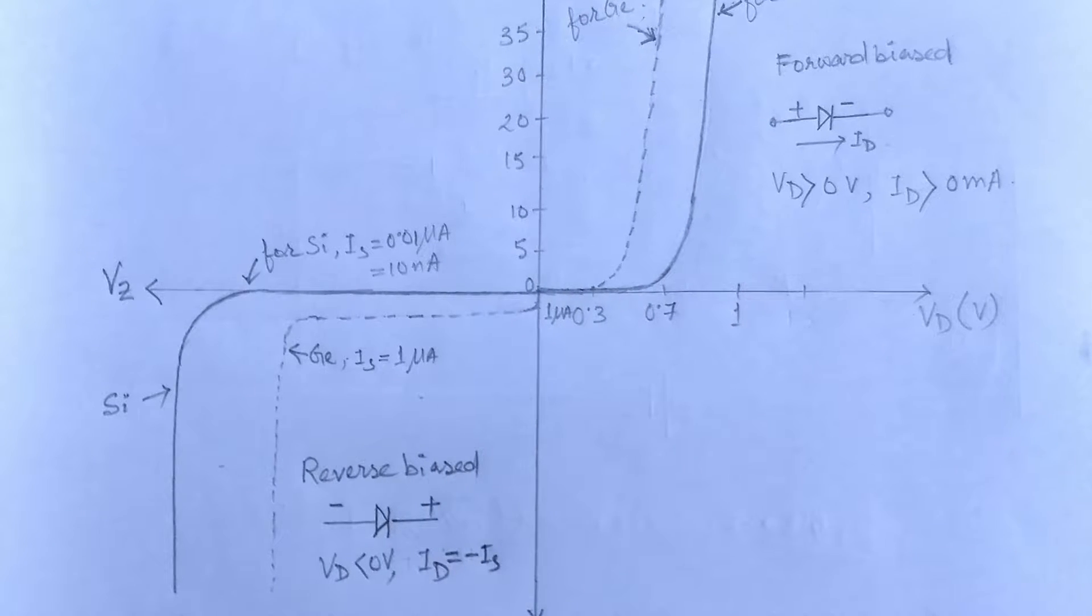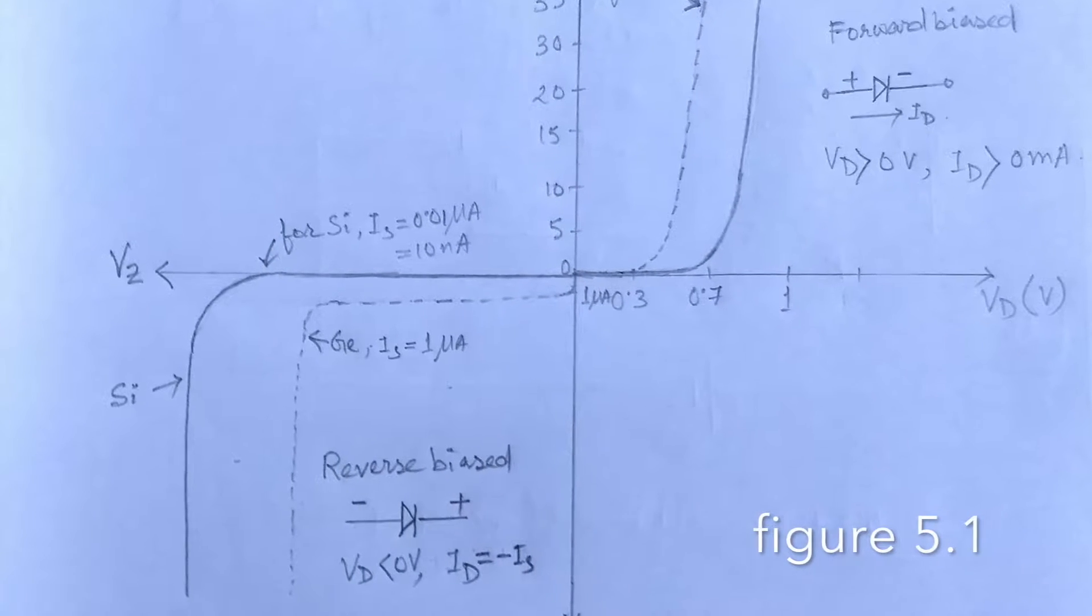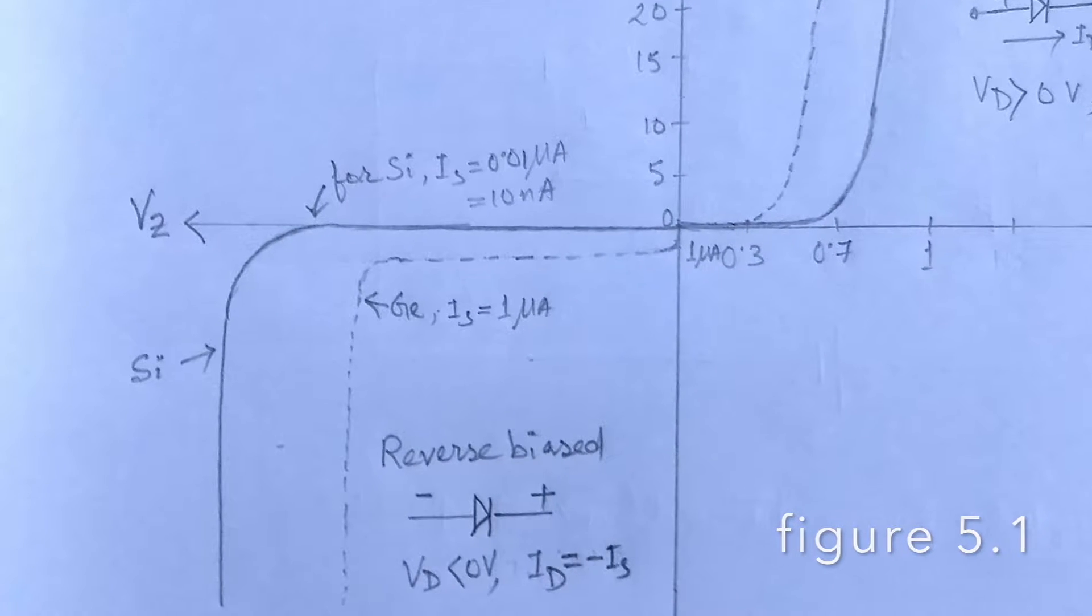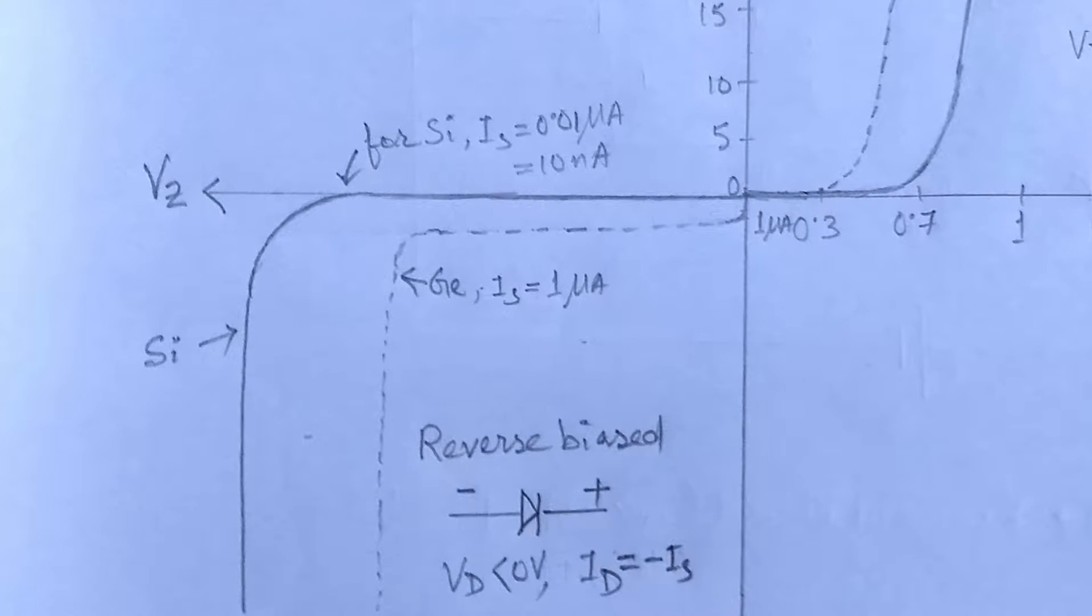Today in this tutorial we'll consider the reverse bias potential of the VI characteristics and learn what is Zener breakdown. We will see what actually happens inside the diode.